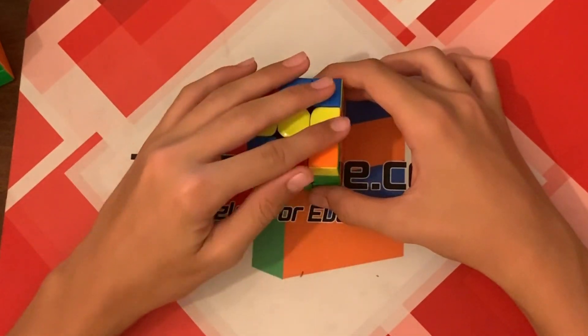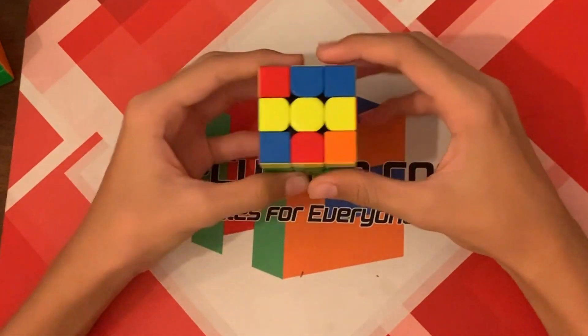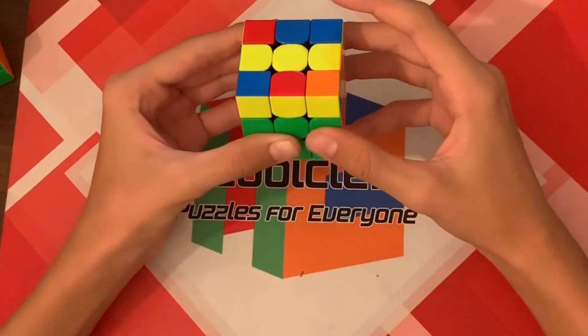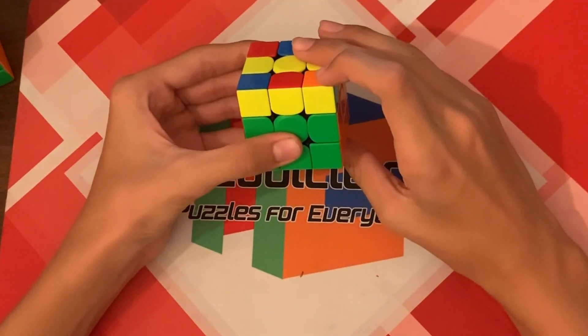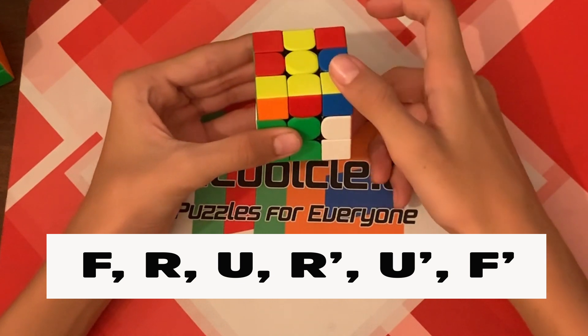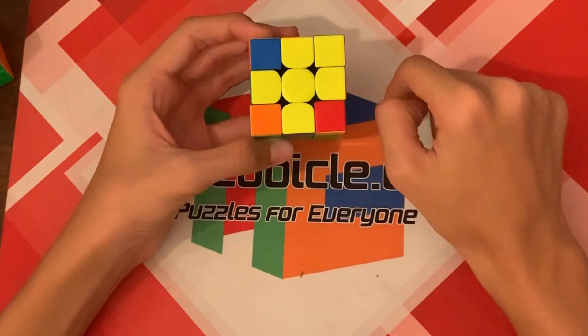So the next case is if you have a line, and notice you could hold it like this or like this. You need to hold it like this, so it's horizontal on the top. And do the algorithm F, R, U, R prime, U prime, F prime. And as you can see, we now have the cross.